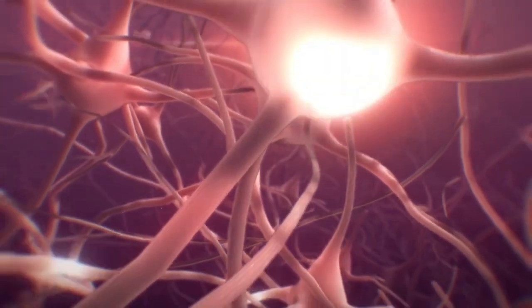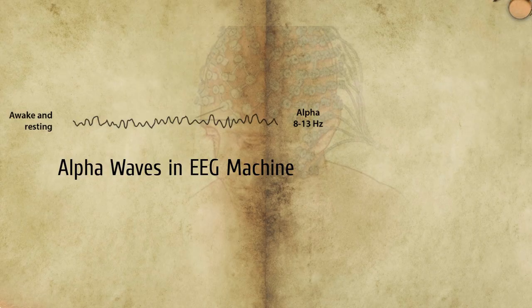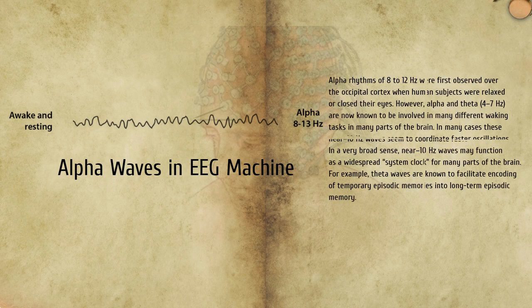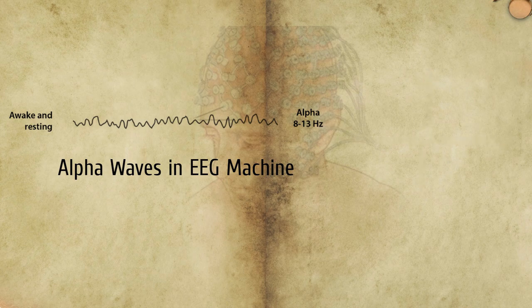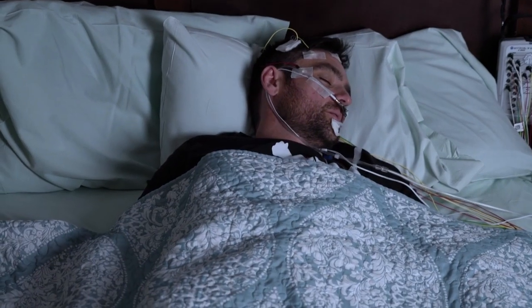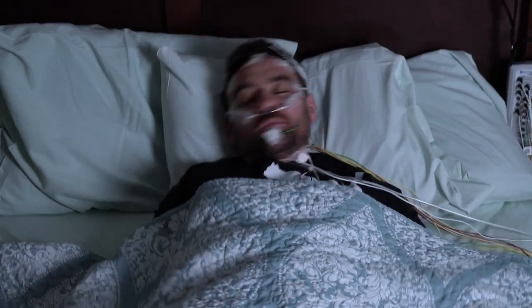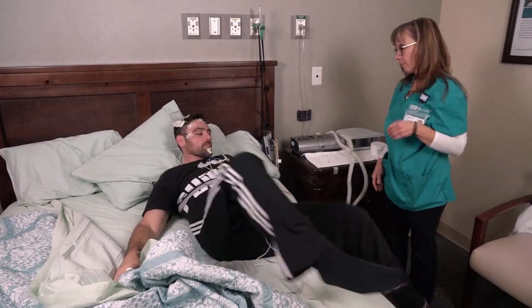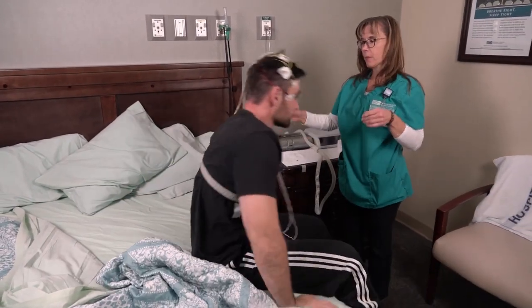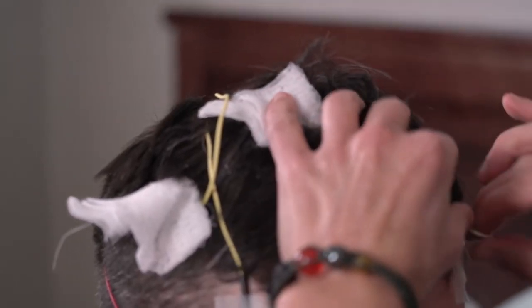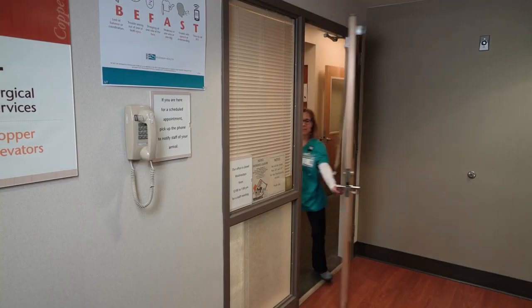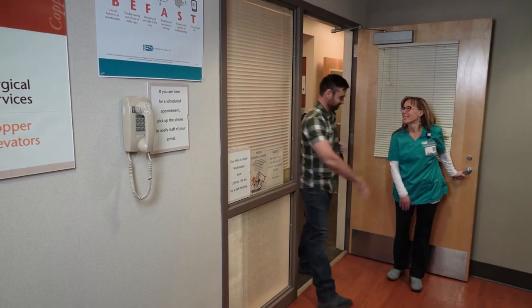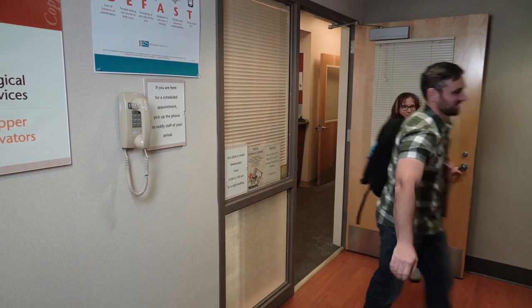Third is alpha waves. Alpha has a frequency between 7.5 and 13 Hz. It is usually best seen in the posterior regions of the head on each side, being higher in amplitude on the dominant side. It appears when closing the eyes and relaxing, and disappears when opening the eyes or alerting by any mechanism such as thinking or calculating. It is the major rhythm seen in normal relaxed adults and is present during most of life, especially after the 13th year.